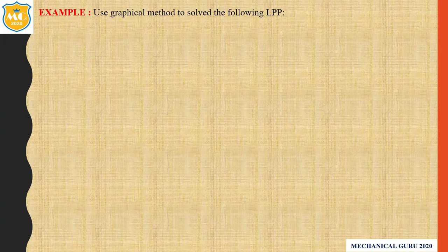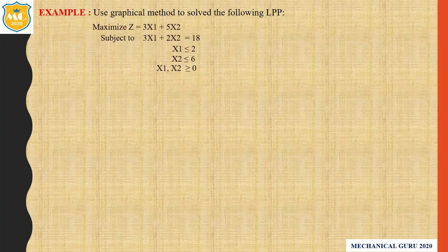Use the graphical method to solve the following LPP. Maximize z = 3x1 + 5x2. Subject to constraints: first, 3x1 + 2x2 = 18; second, x1 ≤ 2; third, x2 ≤ 6; and non-negativity condition x1, x2 ≥ 0.